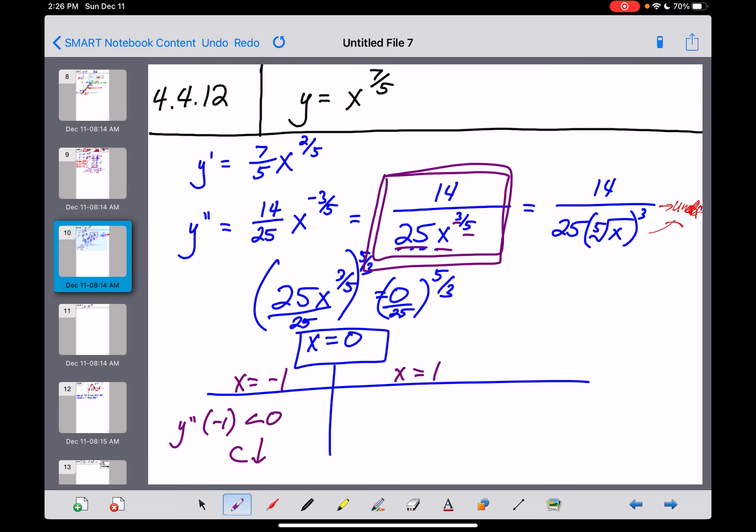But now, I think we can see this pretty quickly. If you put in a positive one, everything in the denominator stays positive, the numerator stays positive. So y double prime of positive one would be positive, and we would be concave up.